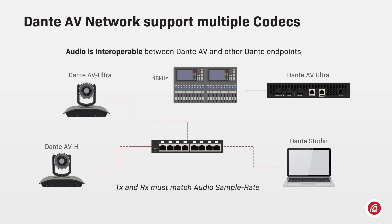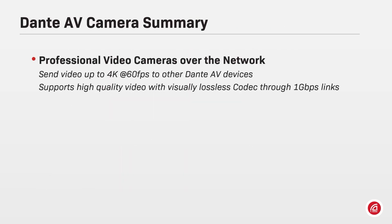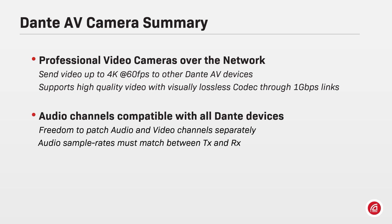And regardless of what codec is being used, if the sample rate matches, the devices can share audio with each other. Summarizing, Dante AV is present in professional video cameras and supports video up to 4K, 60 frames per second with a visually lossless codec through 1Gb Ethernet links. Audio channels coming from the Dante AV camera are compatible with all Dante devices.